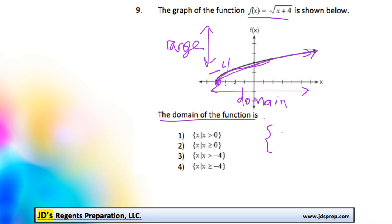So we would write it as x such that x is greater than or equal to negative 4. And it looks like that is option number 4.